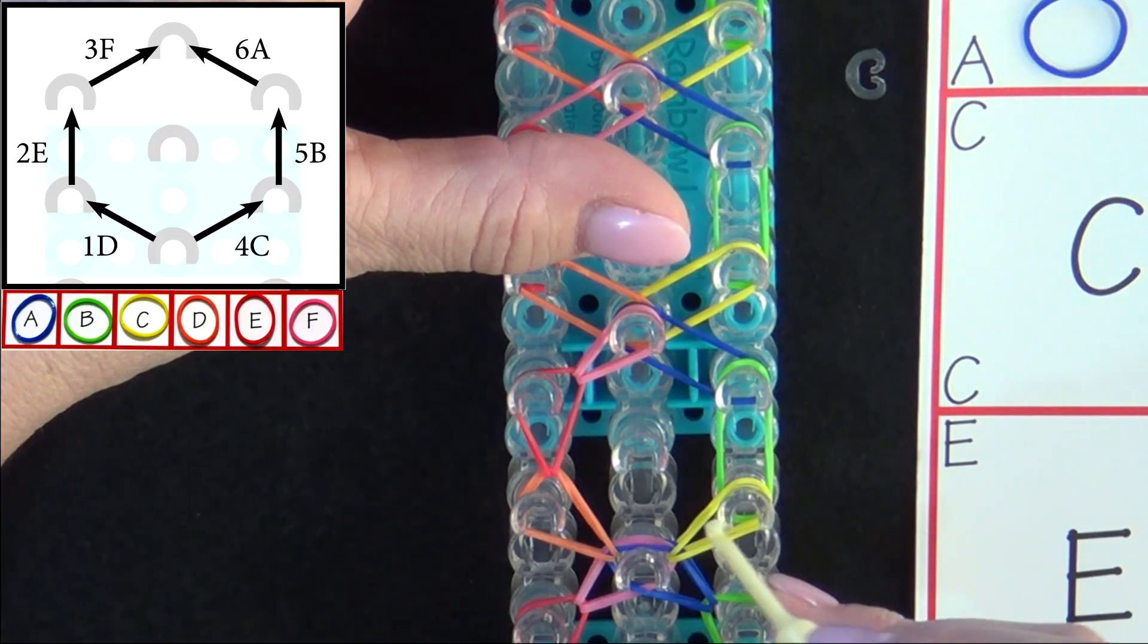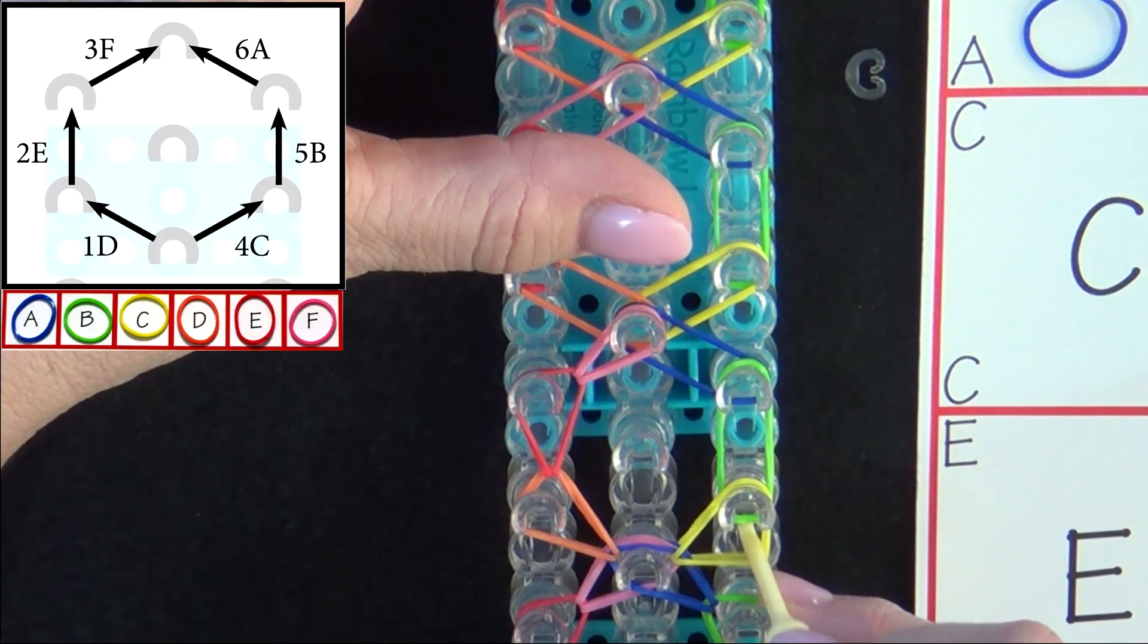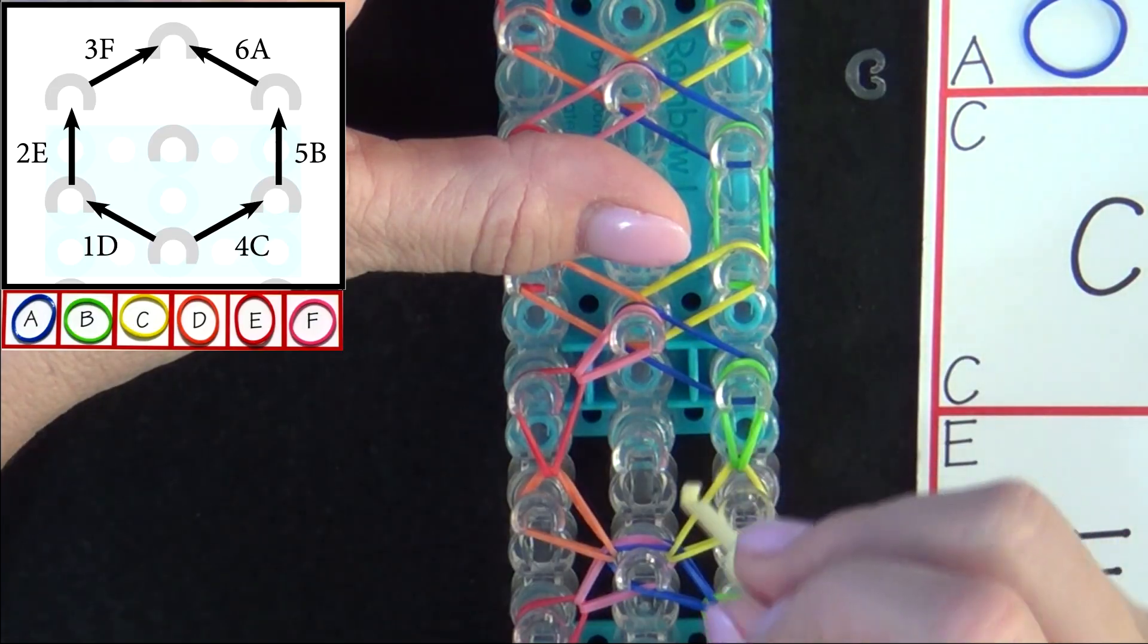Band 5B will be looped forward. You pull those bands back and pull that forward.